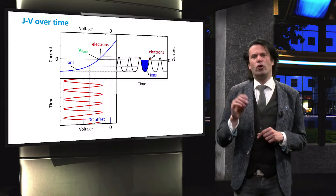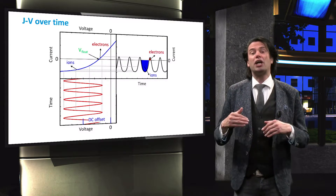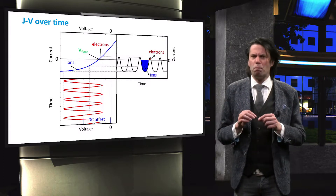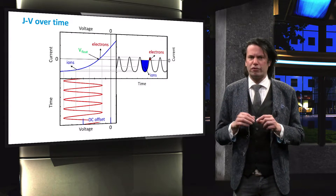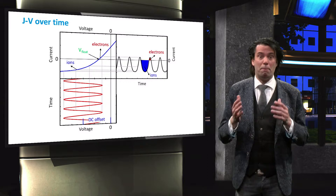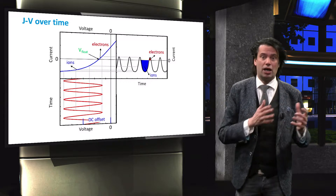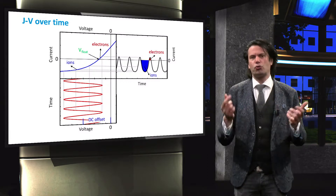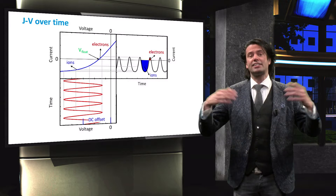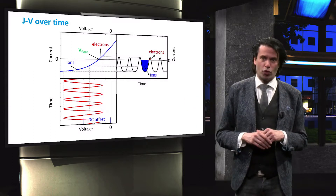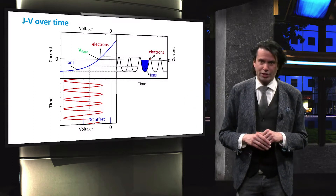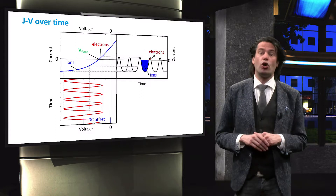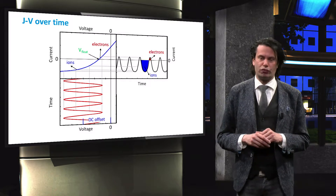Only for a small amount of time during each cycle does the electrode experience an electron bombardment. Importantly, due to the high electron mobility, during this small amount of time, the electron current balances the ion current in the cycle. Consequently, over the entire cycle there is no net current flow towards the electrode, and no charge accumulates on the electrode surface.